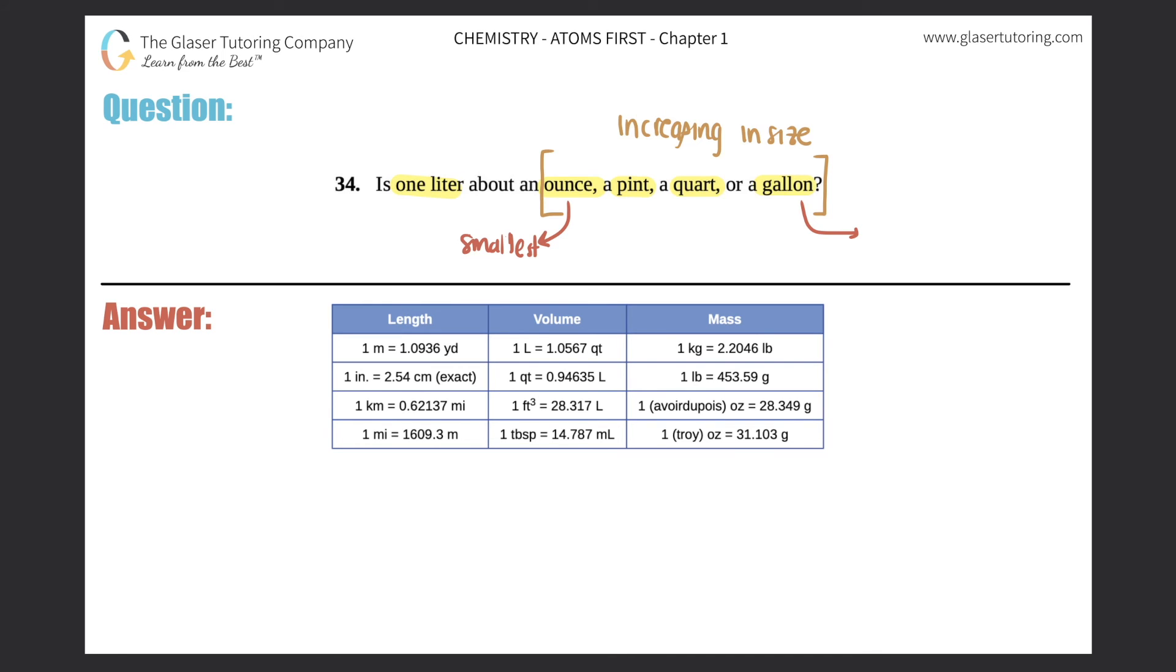Now a liter should be somewhere around this scale here. We kind of see liters especially if you're in a chemistry class. You probably have seen graduated cylinders. Graduated cylinders are these long things like this that fill up your liquids. They come in a lot of different sizes. The ones you probably see in your chemistry class are the 10 mil, I think the 50 mil and I think the 25 or 100.